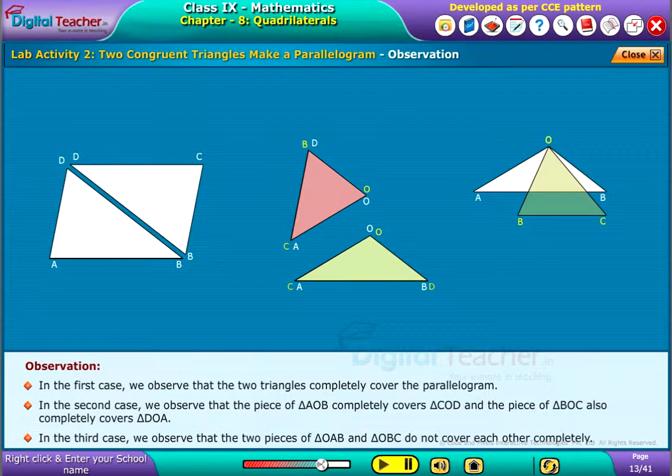In the third case, we observe that the two pieces of triangle OAB and triangle OBC do not cover each other completely.